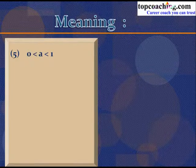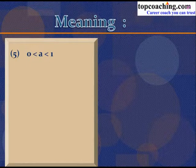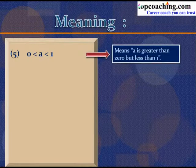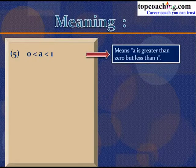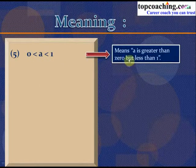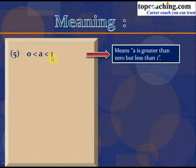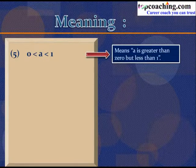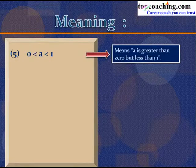If you come across the statement 0 < A < 1, it simply means A is greater than 0 but less than 1 — A lies between 0 and 1, and A cannot equal either 0 or 1. Similarly, replacing 0 by B and 1 by C, the statement B < A < C means A is greater than B but less than C, with both B and C not included.